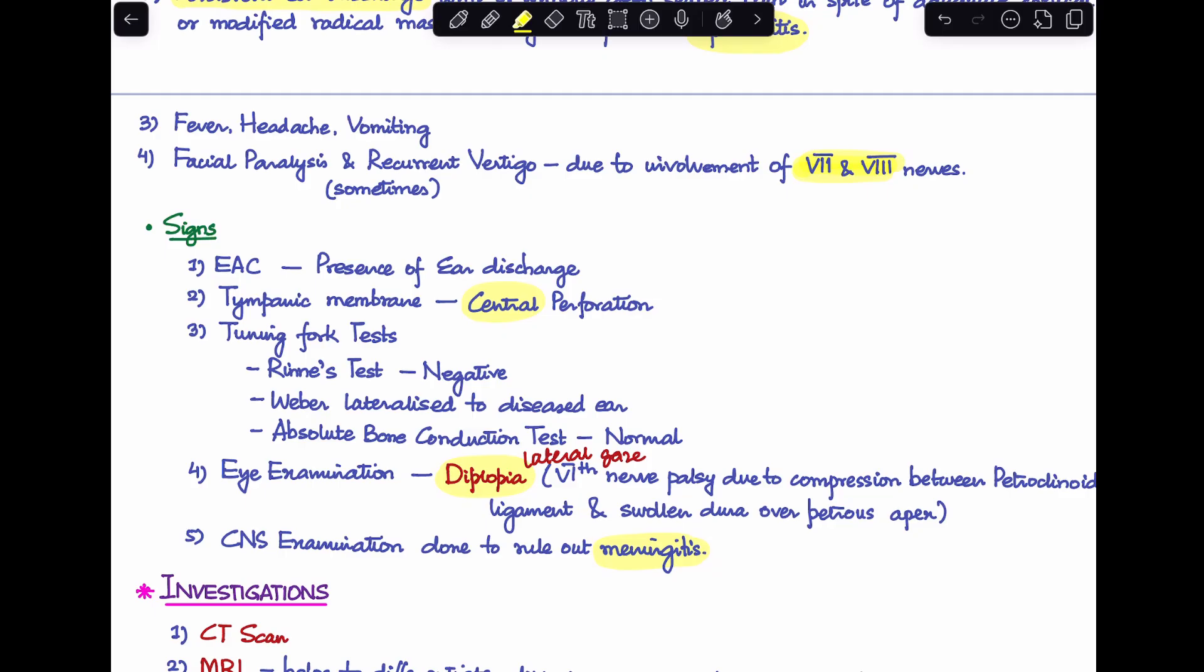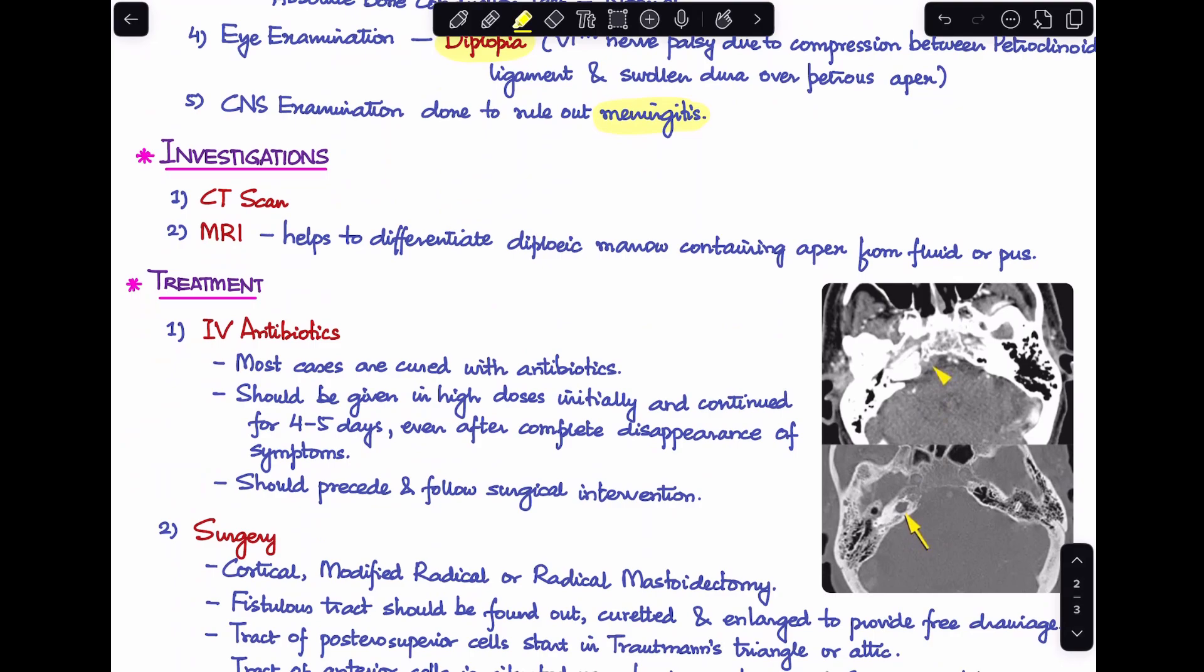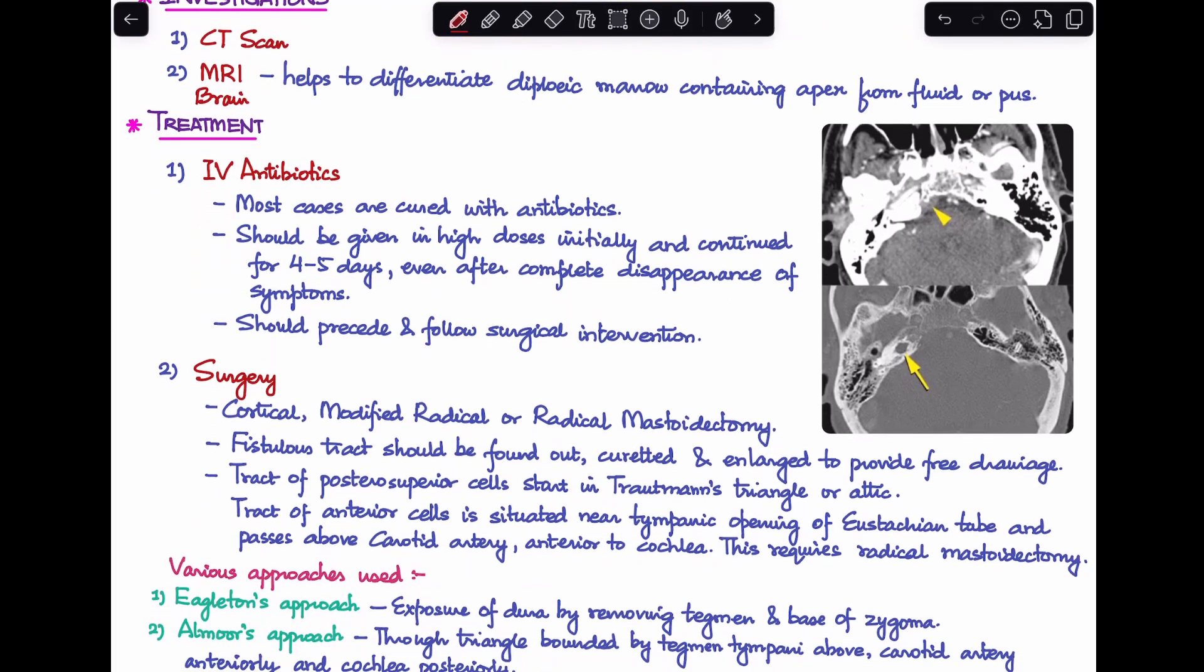So these are the clinical features of petrositis. Now how will you investigate the disease? We can perform a CT scan of the temporal bone that will help you in finding whether there is any bone erosion or not, to see what is the status of pneumatization of the petrous bone. And second test that you should do is an MRI of the brain, and this will help you in differentiating diploic marrow containing apex from fluid or pus.